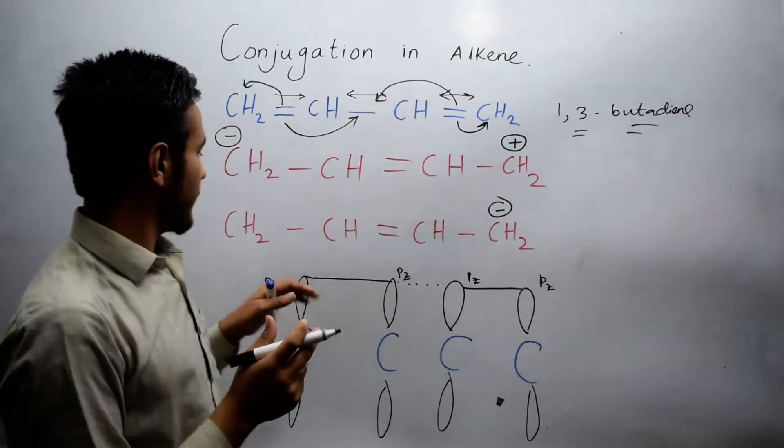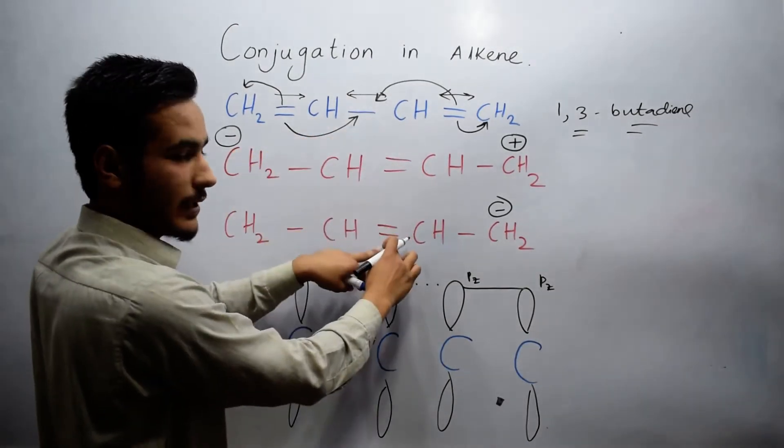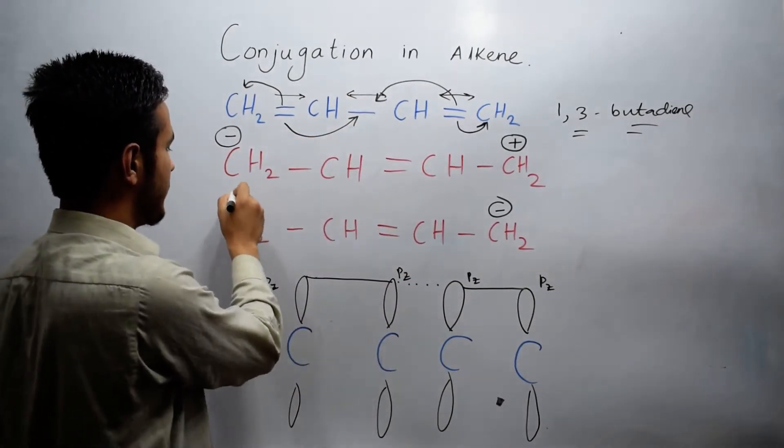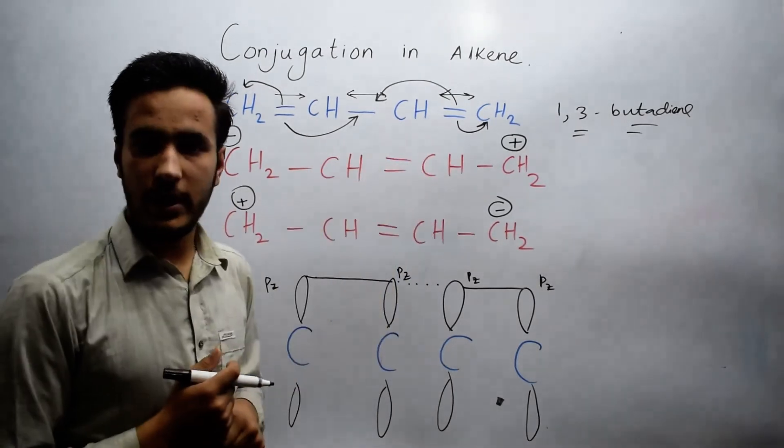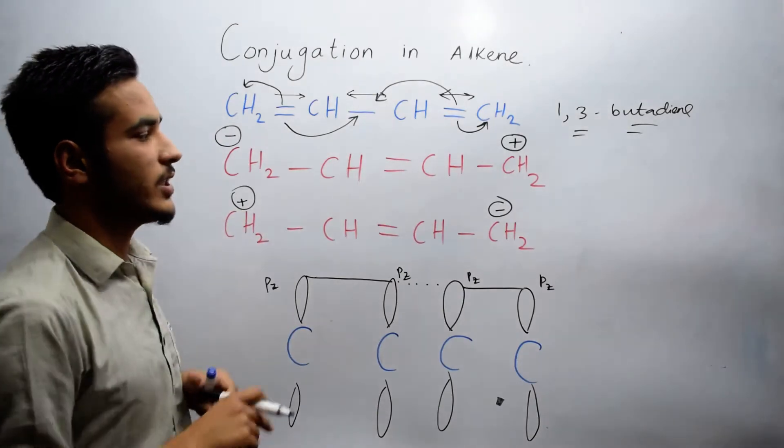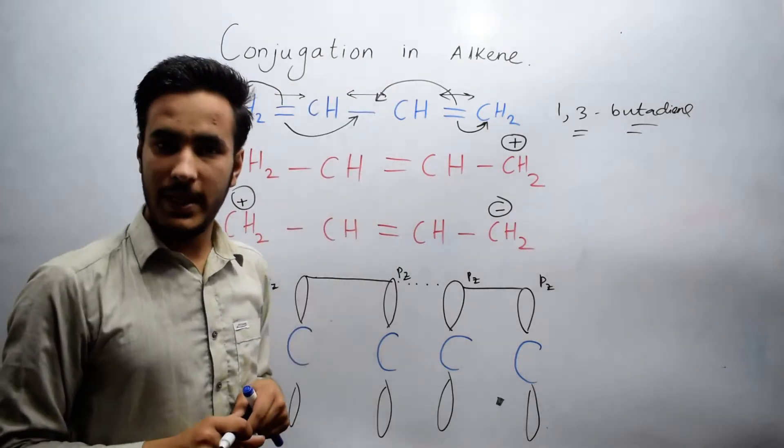Here we will get a positive charge because this bond breaks here, giving us a double bond. In this way, we get two conjugated compounds. This phenomenon is known as conjugation because the delocalization of pi electrons takes place.